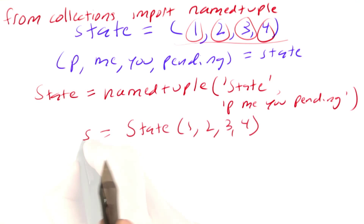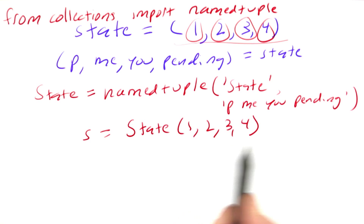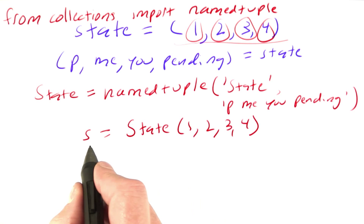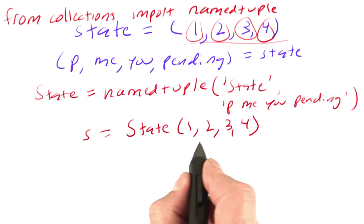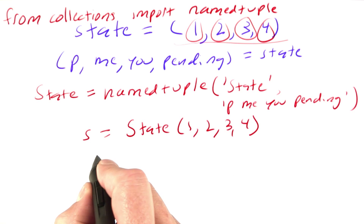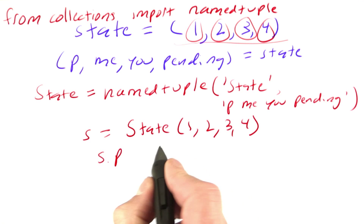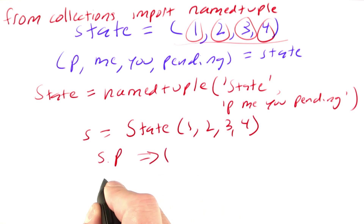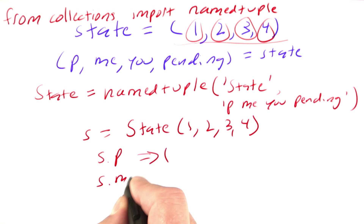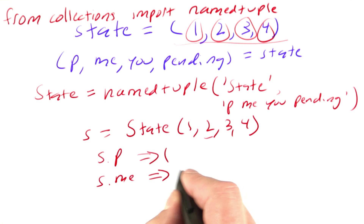The name of the data type is state, and the fields of the data type are p, me, u, and pending. Now I can say s equals State(1, 2, 3, 4), and I can ask for the components of s by name. So s.p would be equal to 1, s.me has the value 2, and so on.